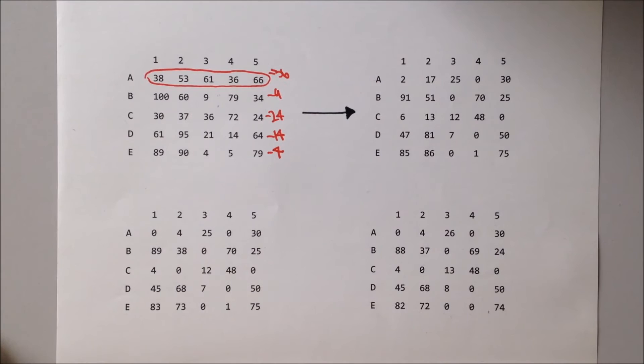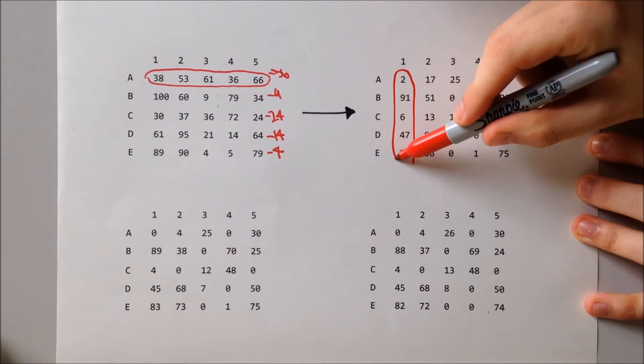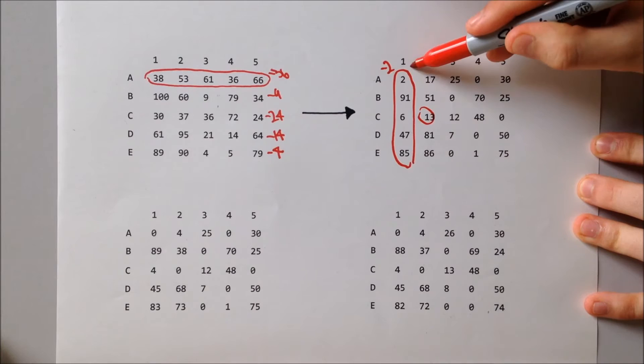Step two, we're going to reduce each column by its smallest element. The first column, smallest element is 2. The second column, smallest element is 13. And then we're not going to change the other columns because they all have zeros in.